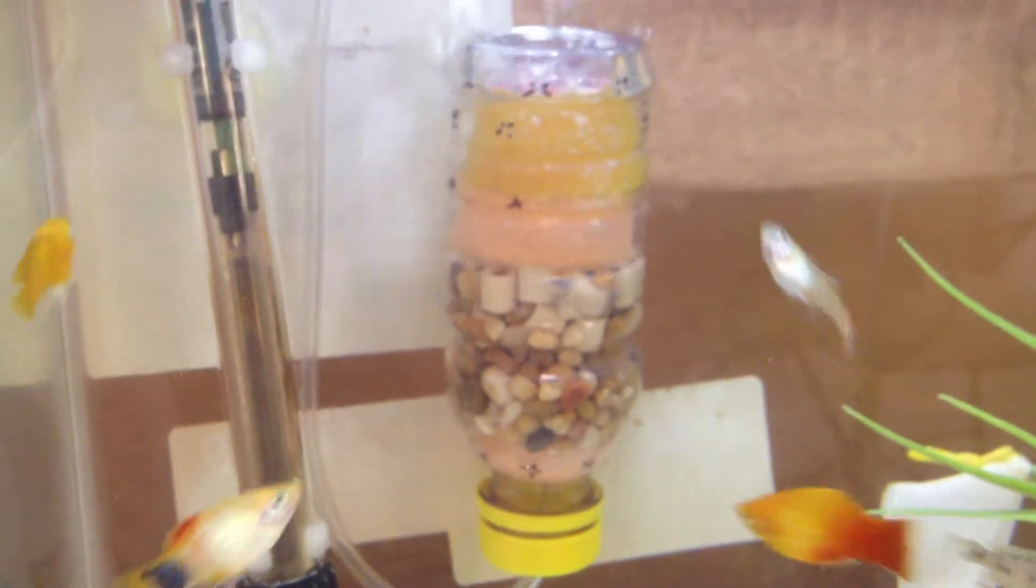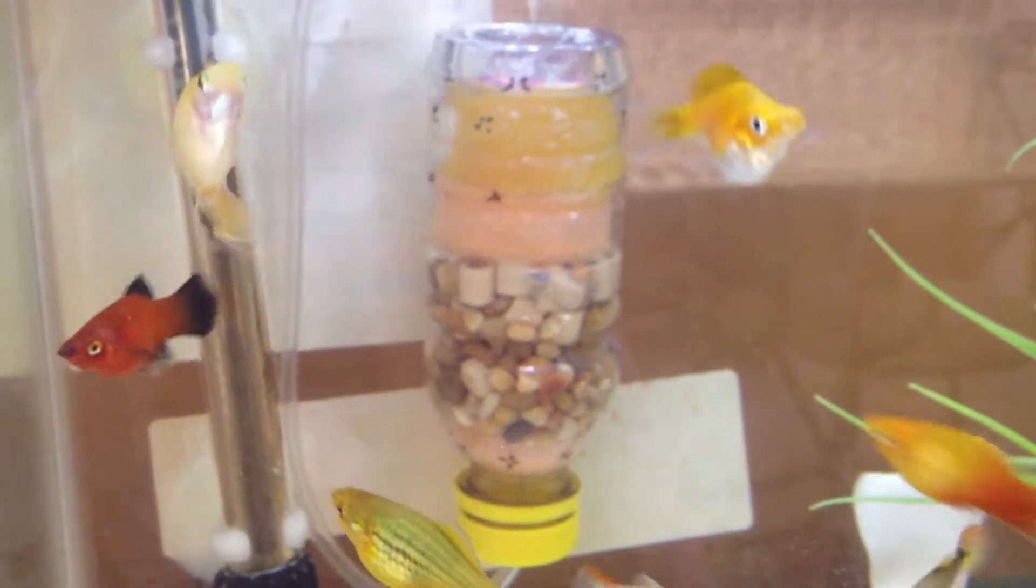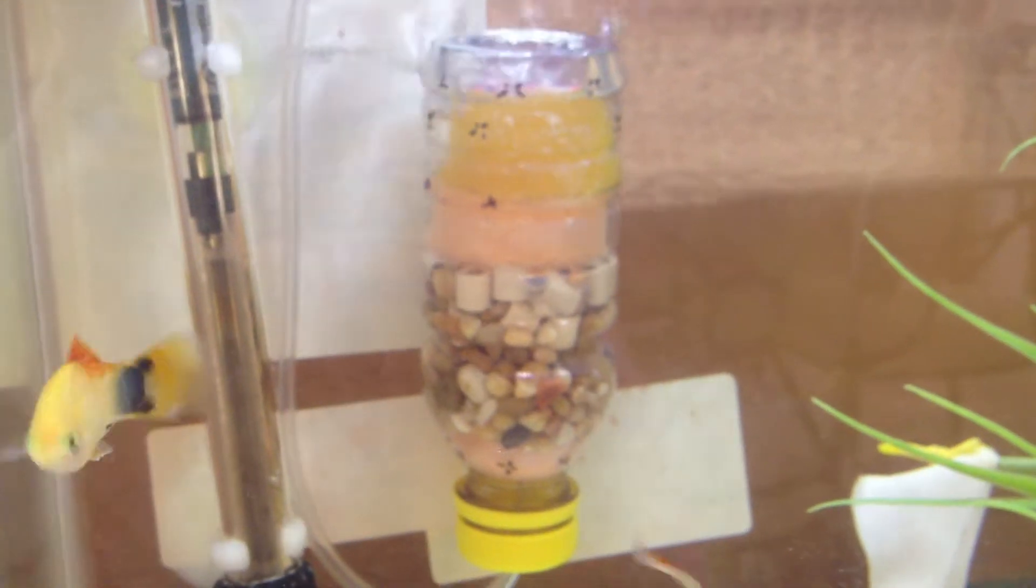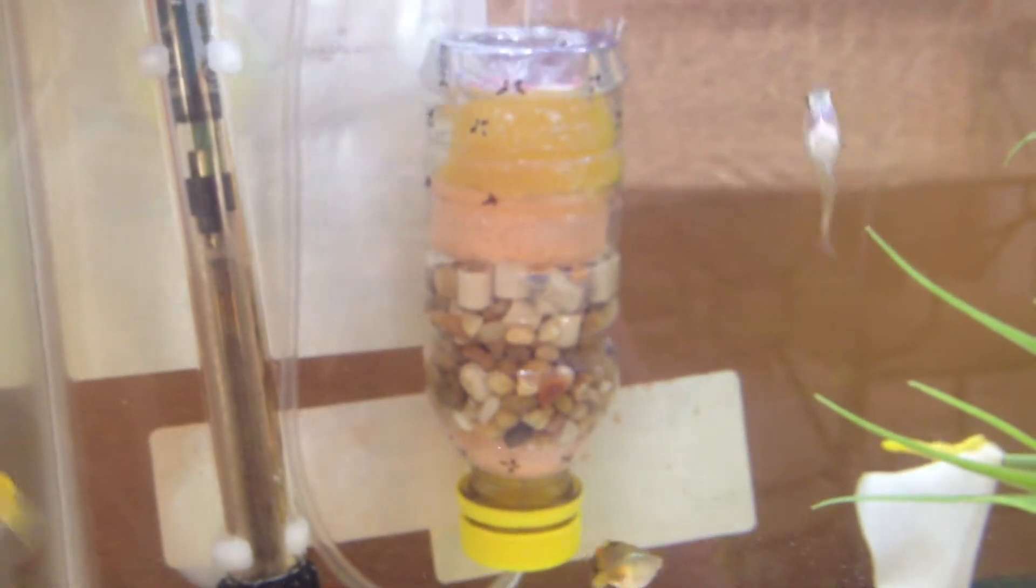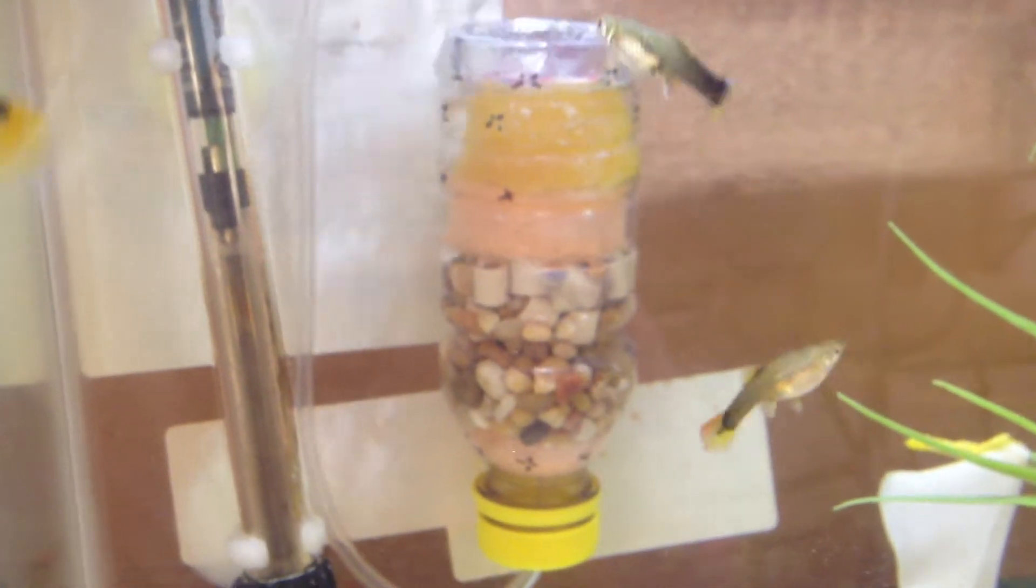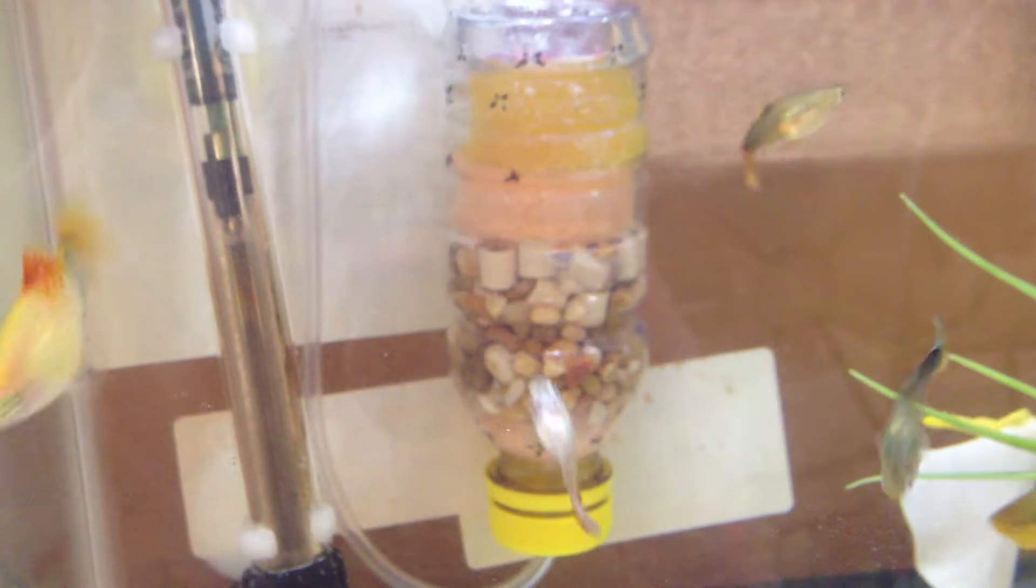I use a Minute Maid juice bottle and the reason why I like that is because the cap is a lot bigger. It's easier for me to put everything through and it also just screws on and stays pretty tight. No air holes, no leaks.